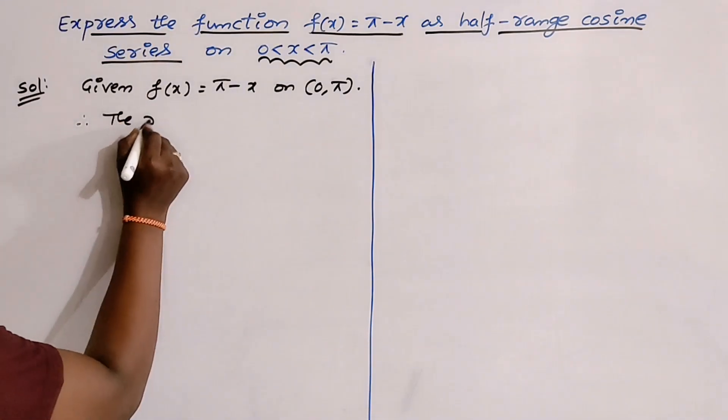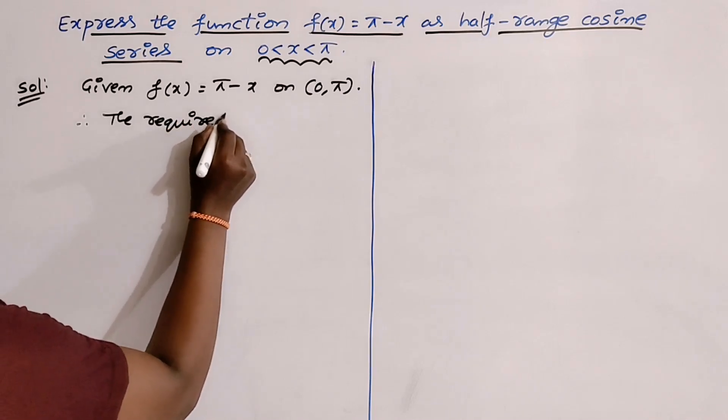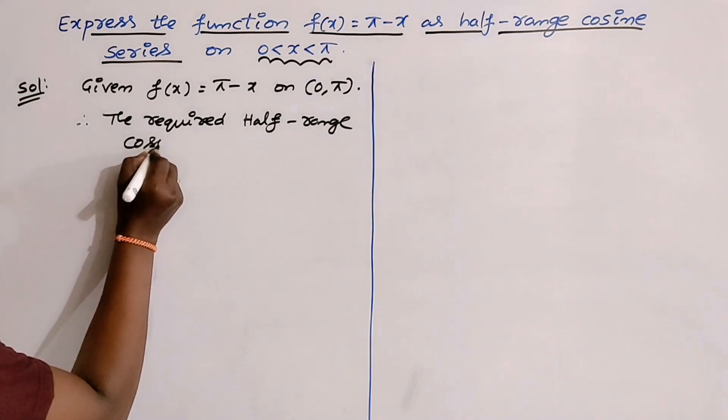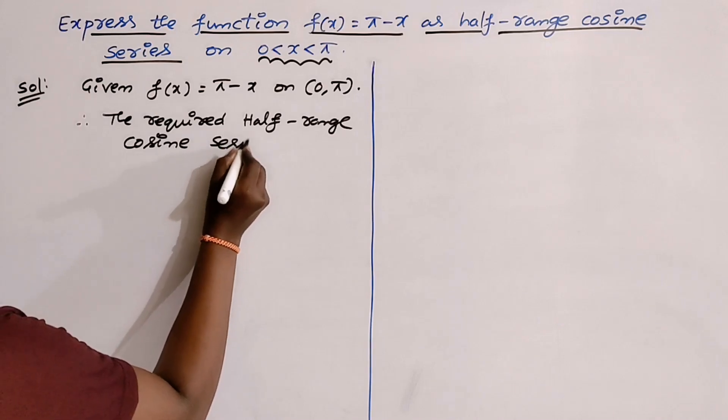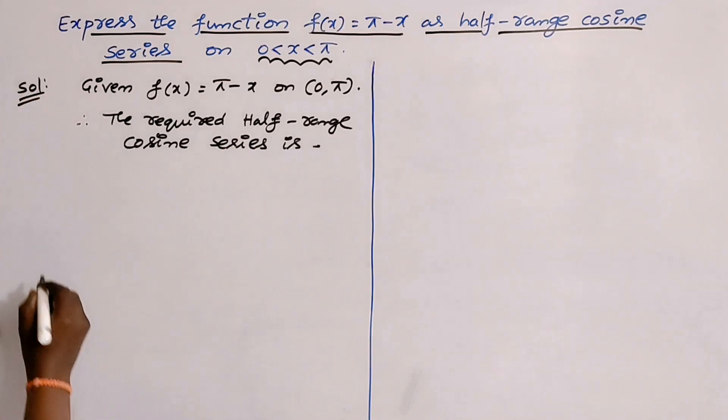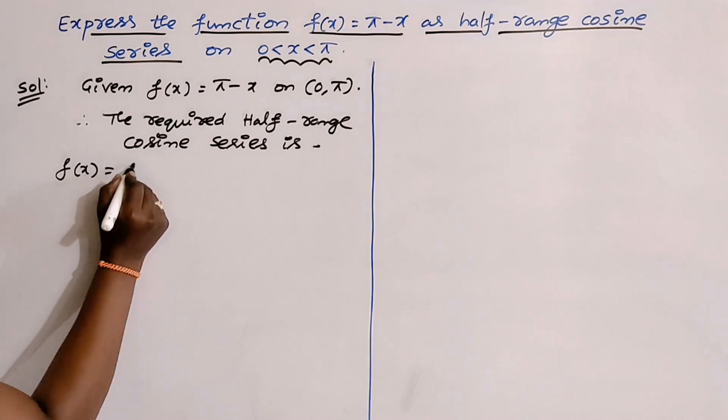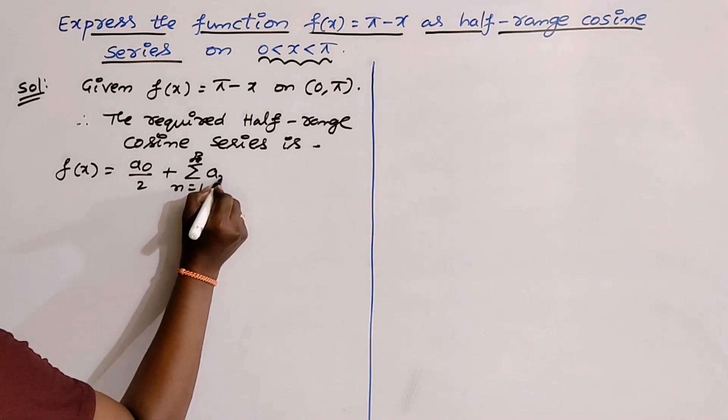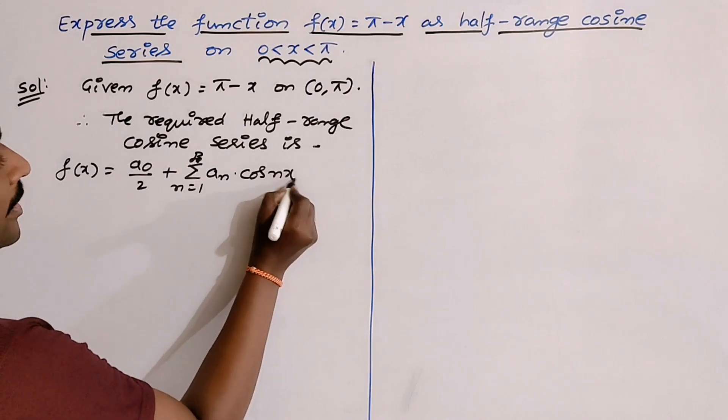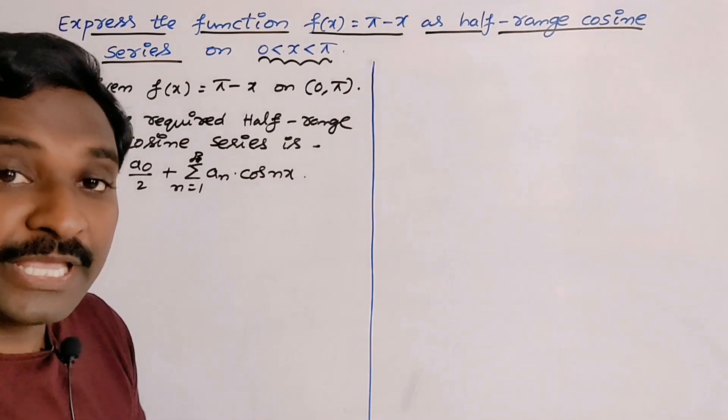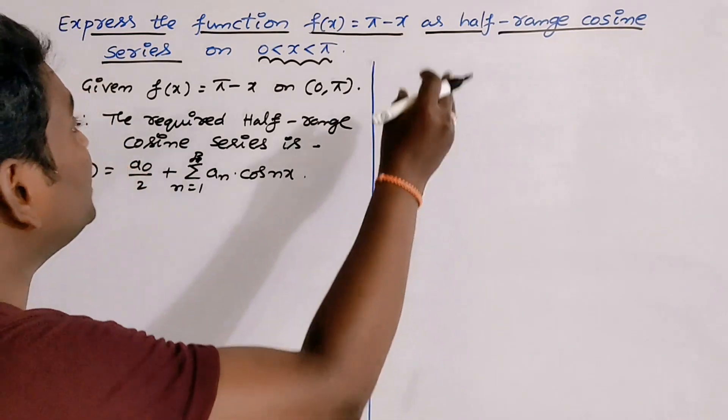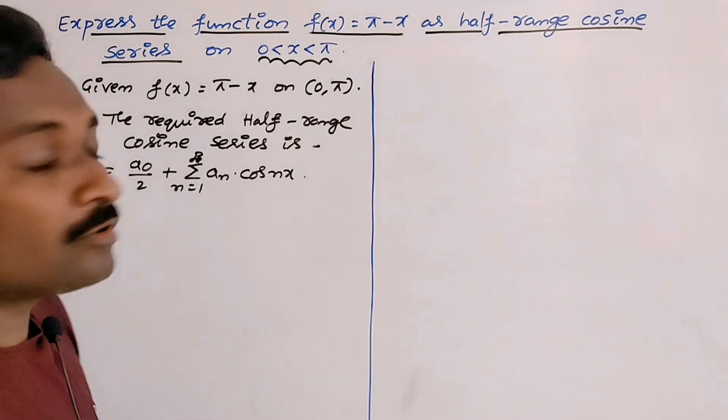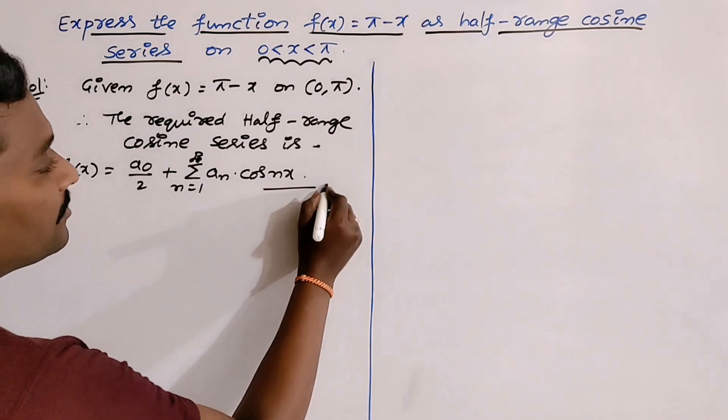The required half-range cosine series is: first write the form of a cosine series, f(x) = a₀/2 + Σ(n=1 to ∞) aₙcos(nx). Don't find out bₙ value here. bₙ is the sine term. Here we need only cosine series expansion. That's why a₀ and aₙ are cosine terms. We have to find out these both values only. Take it equation number capital A.